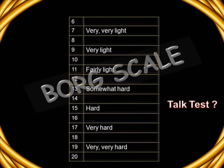The Borg scale is used to quantify the intensity of the exercise in terms of the patient's perception. The scale runs from 6 to 20 points: 7 means very, very light; 9, very light; 11, fairly light; 13, somewhat hard; 15, hard effort; 17, very hard effort; 19, very, very hard; 20 is the maximum. The patient is given this scale and asked to rate what he felt about the exercise, and that rating is used to quantify the intensity of the effort.